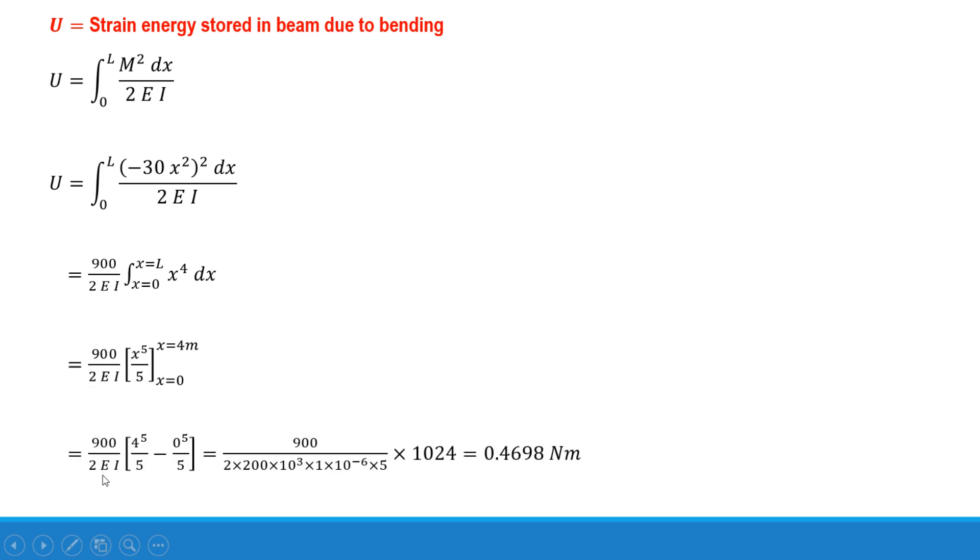So 900 upon 2EI: in place of x substitute the upper limit that is 4, so it is 4^5/5 minus 0^5/5. That is 900 divided by 2. E is 200 × 10^3 MPa and moment of inertia is 1 × 10^-6. Taking 5 outside, 4^5 is 1024. So the strain energy stored will be 0.4698 Nm.